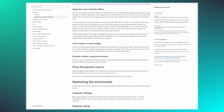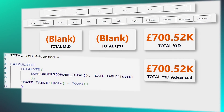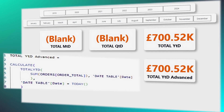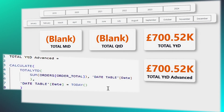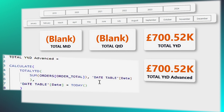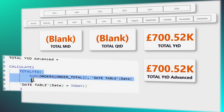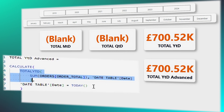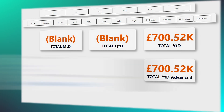This brings us to the second method, which I highly recommend. Utilizing the CALCULATE function, you can apply a filter specifying that the total to date should be calculated when the date in the date table matches today's date.